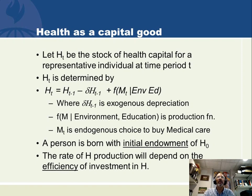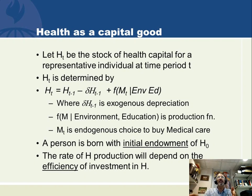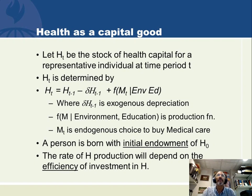We have depreciation of our health capital and investment in our health capital by buying medical care to replace whatever depreciated. We start with an initial endowment H at time zero and go through this model every year of our life. As we buy new investments, we care a lot about how efficient those investments are. We want high-quality inputs, and we must watch the rate of productivity — the F equation — like a hawk, because it determines how much to invest in medical care to get the optimal solution.